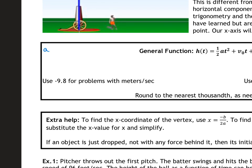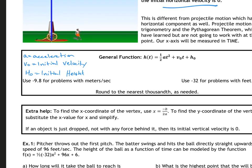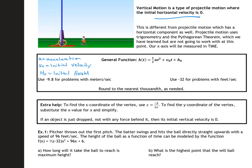a is going to be acceleration. v-sub-zero is your initial velocity. h-sub-zero is your initial height — where you're starting from. If there is no initial velocity or if you're dropping an object, it's always going to be zero. For your acceleration, you're going to use negative 9.8 if it's meters per second, or 32 if it is feet per second.